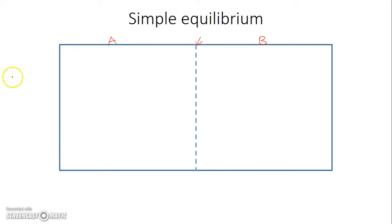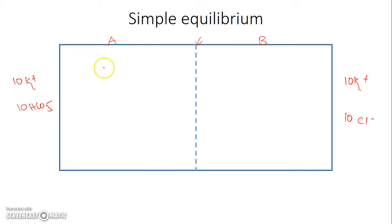Now, let us add on side A 10 ions of potassium and 10 ions of bicarbonate. On the other side, 10 molecules of potassium and 10 different ions like chloride. So here it is 10 potassium plus 10 potassium, and 10 bicarbonate initially and 10 chloride on this compartment.